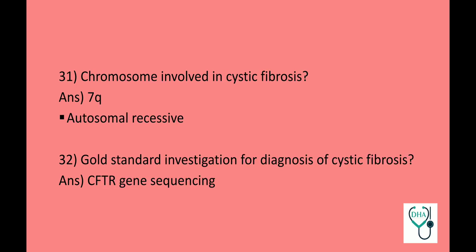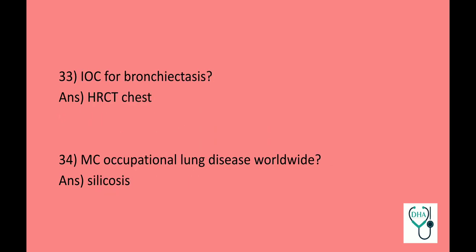Chromosome involved in cystic fibrosis: 7q, and the mode of inheritance is autosomal recessive. Gold standard investigation for diagnosis of cystic fibrosis: CFTR gene sequencing. Investigation of choice for bronchiectasis: HRCT chest.